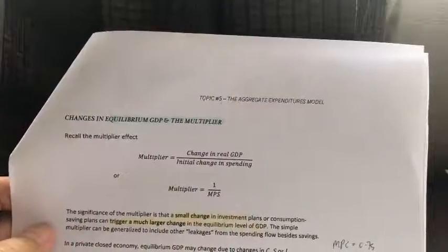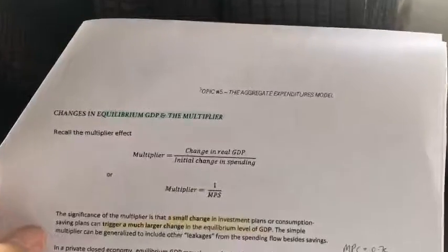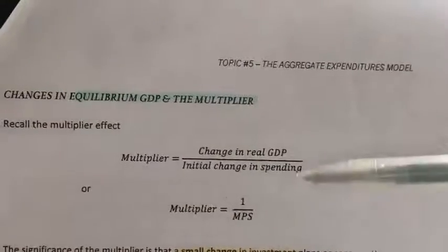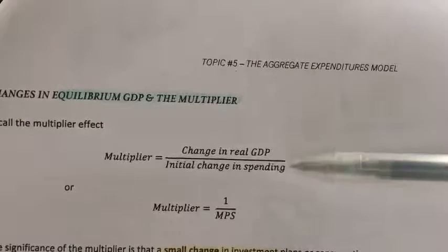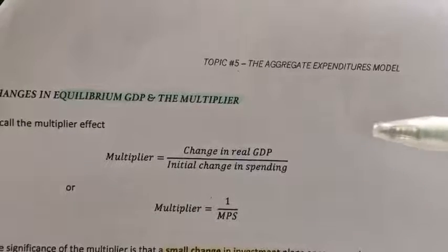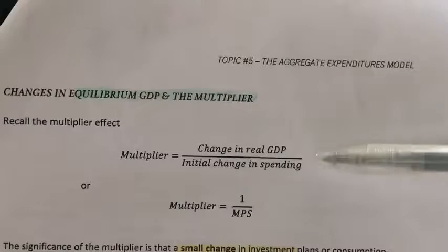Okay, let's look at the multiplier effect again. Now, in topic four, we learned about this concept, multiplier effect. There were two formulas that you learned, right? So the first formula is this one, change in real GDP over the initial change in spending.